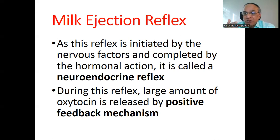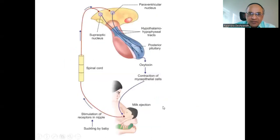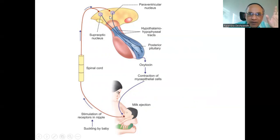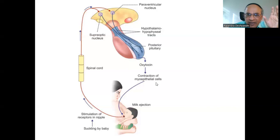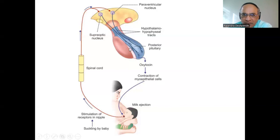This continuous positive stimulation to the brain is why this is called a positive feedback mechanism. In the diagram you can see: suckling of the baby stimulates receptors in the nipple, signals go to the spinal cord, then to the supraoptic and paraventricular nuclei of the hypothalamus. The hypothalamo-hypophysial tracts carry the signal to the posterior pituitary, which secretes oxytocin, causing contraction of myoepithelial cells in the breast and milk ejection. This is a very short but important topic for your examination.